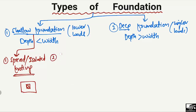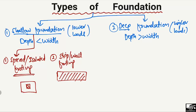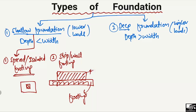The second type of shallow foundation is the strip footing, also known as the wall footing. If we consider a concrete wall or masonry wall, the footing provided beneath this wall is known as the strip or wall footing. It is called so because it is provided beneath a wall in a strip form.